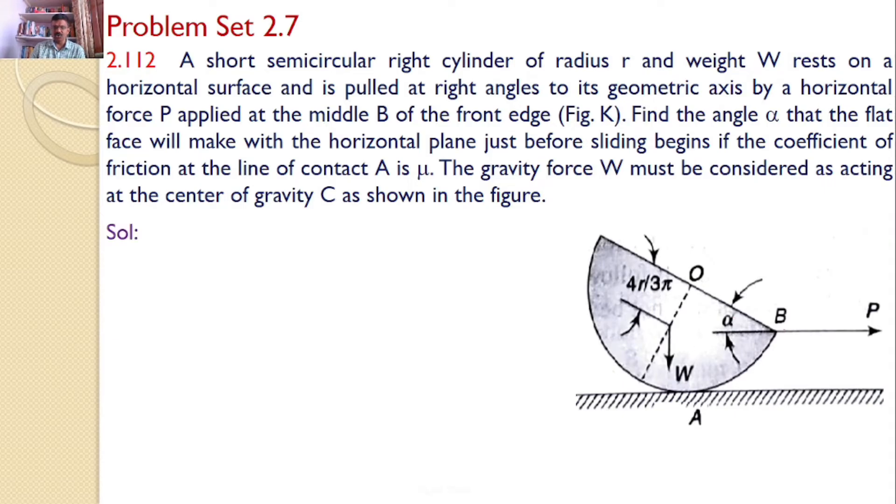There is a semicircular right cylinder and force P is pulling in this direction. Let us consider the various forces acting on this cylinder. The first force is self-weight W. Next force is the force P. And there is a normal reaction that is N. And since the sliding must be avoided, there must be a frictional force μN. There are only 4 forces: 1, 2, 3, 4.